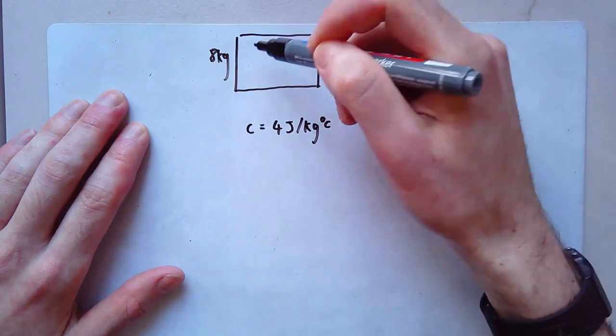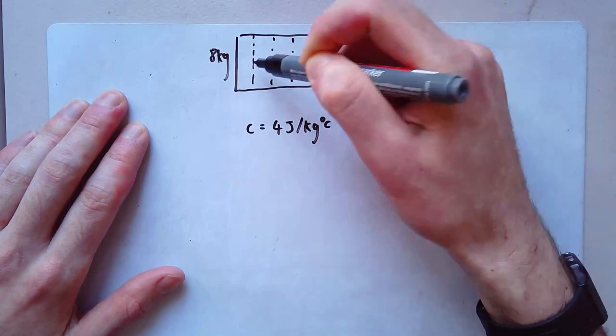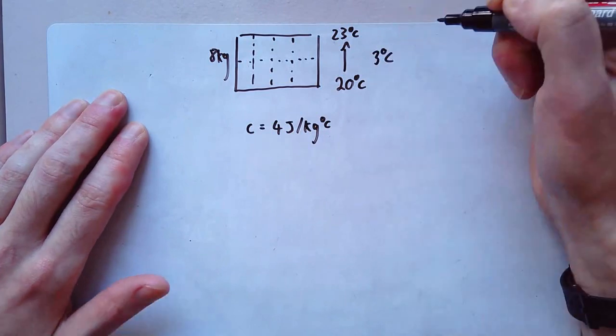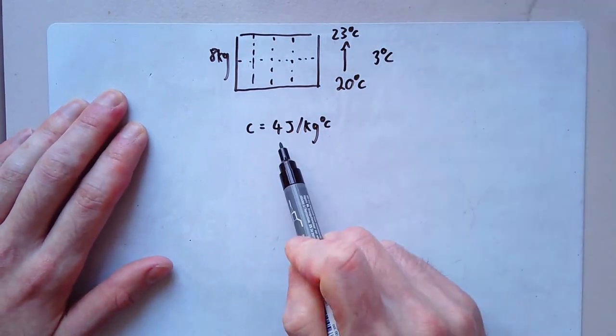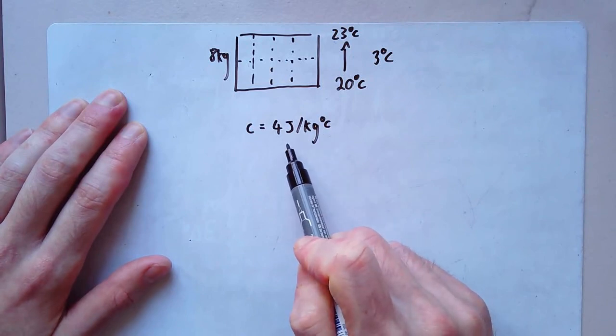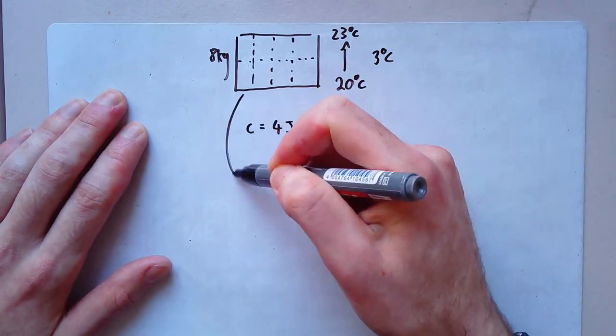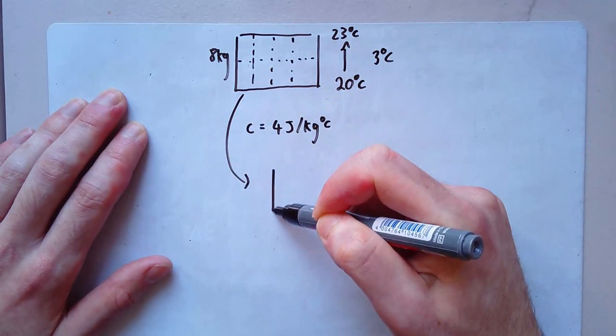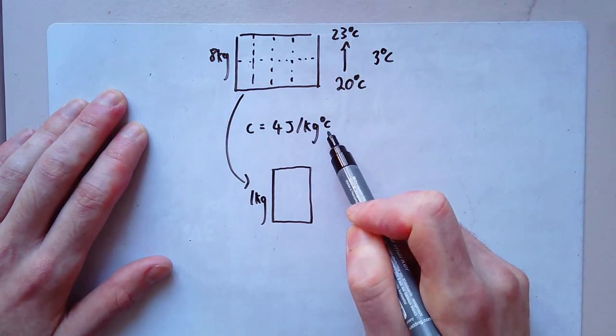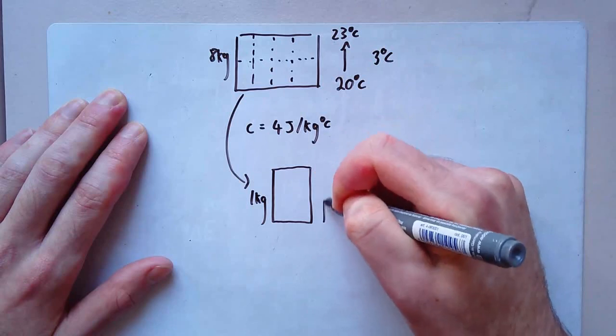So the first thing I want to think about, I want to work out how much energy is required to do this, to raise its temperature by that much. So first, I'm going to split my box up into those little kilograms like I did last time. So each of those represents one kilogram. The difference here is three degrees C. Now, what this means is that every kilogram for every degree requires four joules.